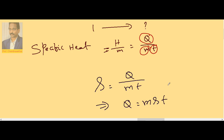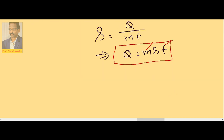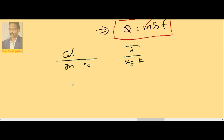From S = Q/(MT), we get Q = MST. So Q is the heat required to raise the temperature of mass M through T degrees centigrade, and S is its specific heat or specific heat capacity. The unit of specific heat in CGS is calorie per gram per degree centigrade, and in SI it is Joule per kg per Kelvin. The relation between these two: 1 calorie per gram per degree centigrade equals 4200 Joule per kg per Kelvin.